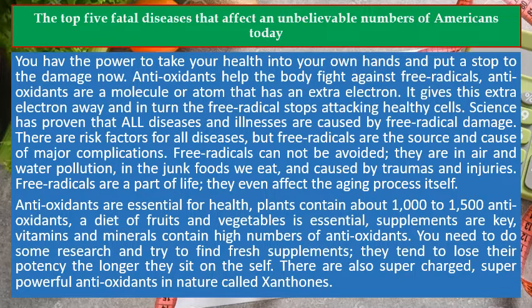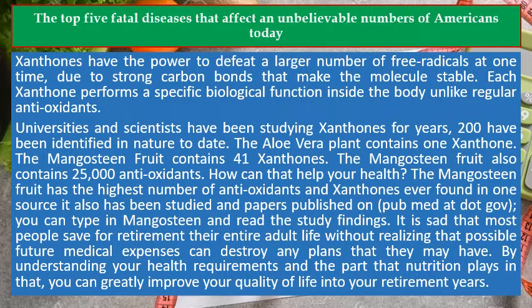There are also supercharged, super powerful antioxidants in nature called xanthones. Xanthones have the power to defeat a larger number of free radicals at one time, due to strong carbon bonds that make the molecule stable. Each xanthone performs a specific biological function inside the body, unlike regular antioxidants. Universities and scientists have been studying xanthones for years — 200 have been identified in nature to date. The aloe vera plant contains 1 xanthone, while the mangosteen fruit contains 41 xanthones.